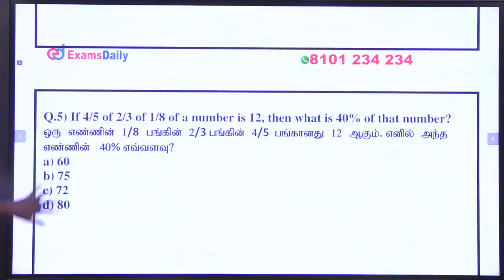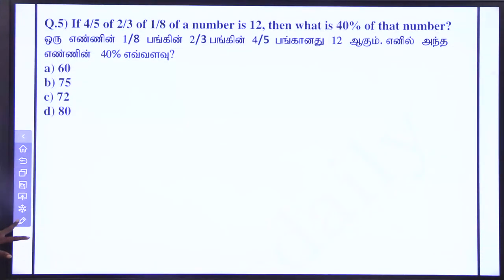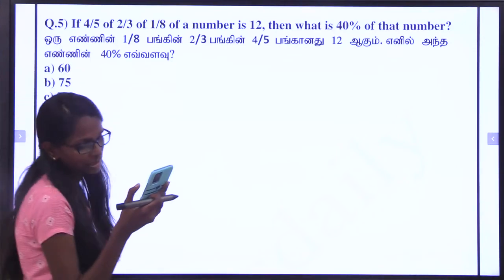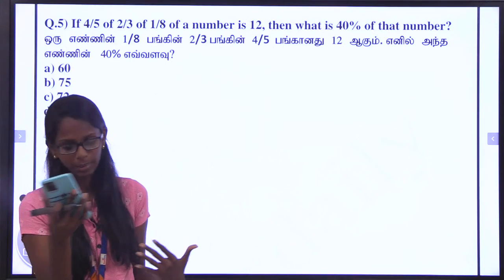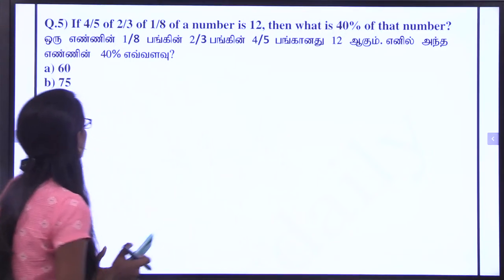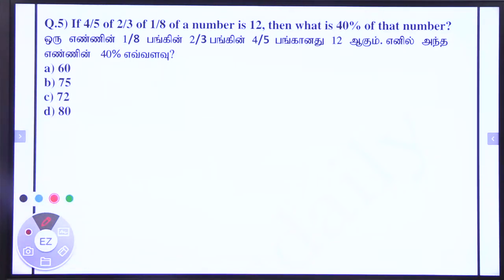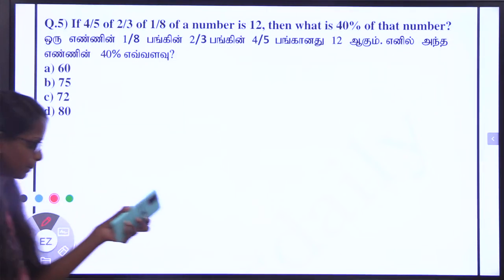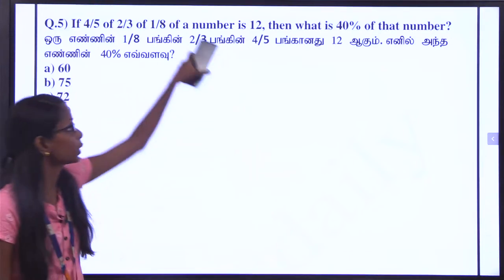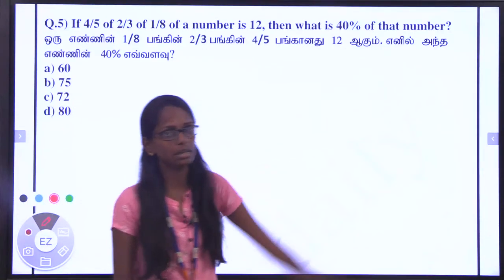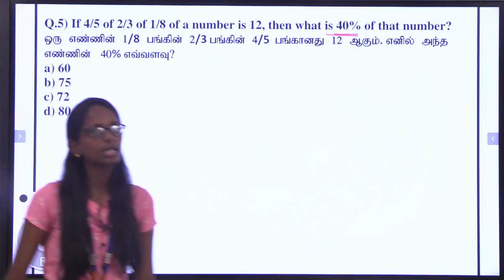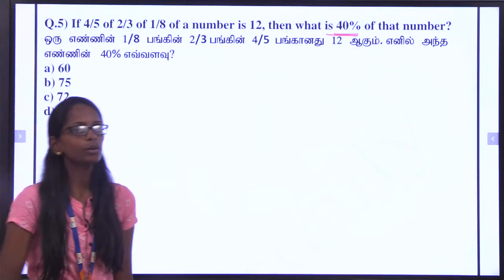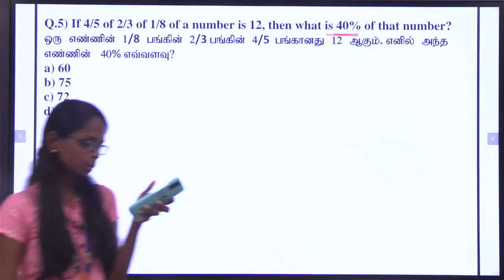Next question — fifth question. Once you see one method, the same method applies to all problems. All problems become easy when you see one method. If 4 by 5 of 2 by 3 of 1 by 8 of a number is 12, then what is 40% of that number? We need to first find x, then calculate 40% of x.